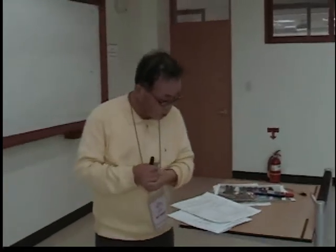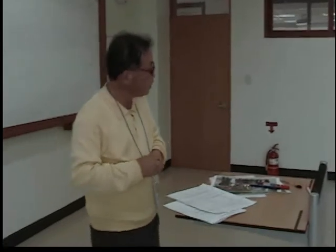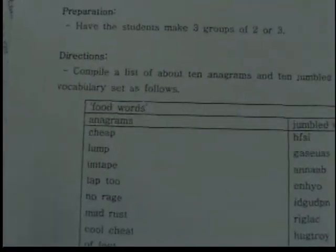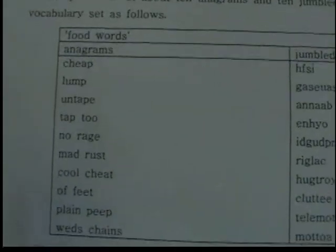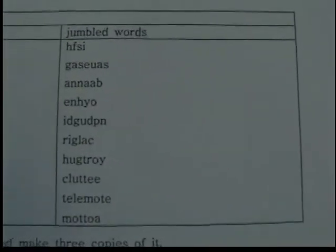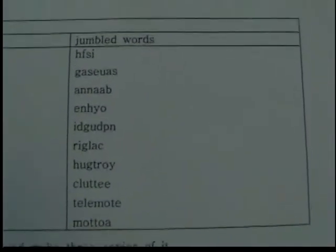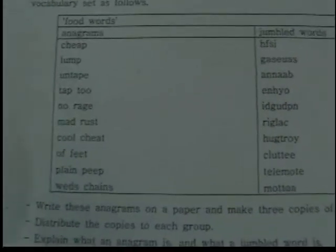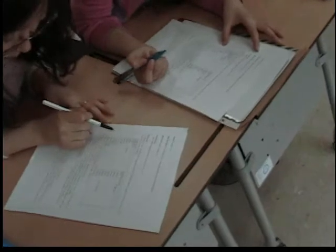Now, let's move on to the exercise. You can see the table on the paper. We have 10 anagrams on the left column and 10 jumble words on the right column. Rearrange the letters of each word and make them into food words by changing the order of the letters.